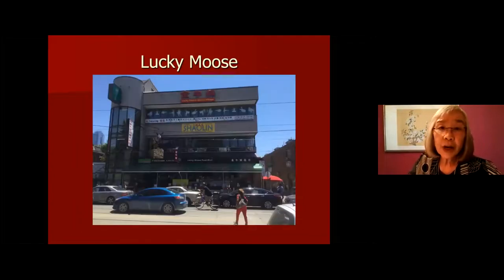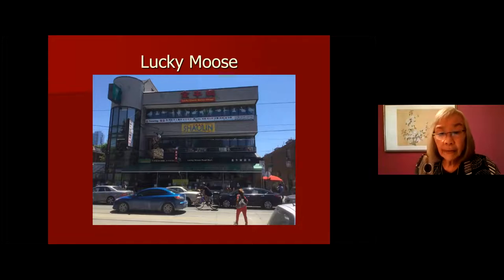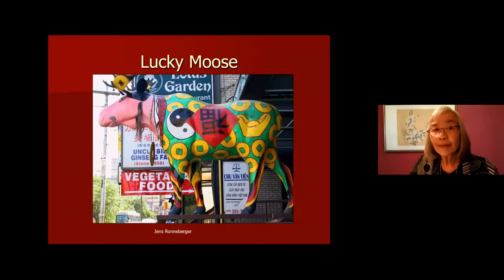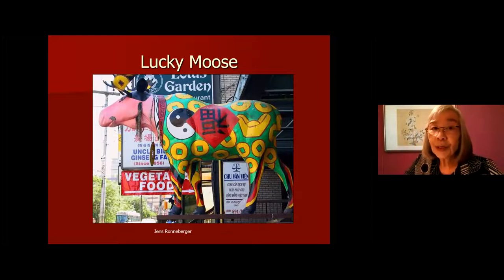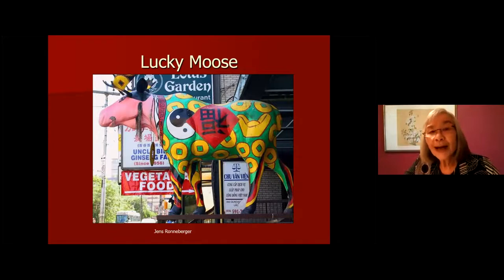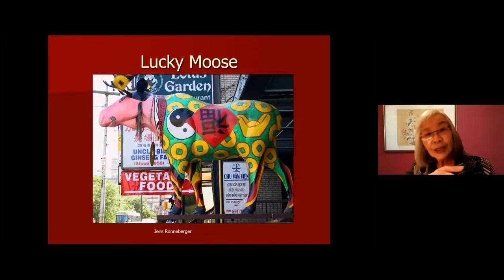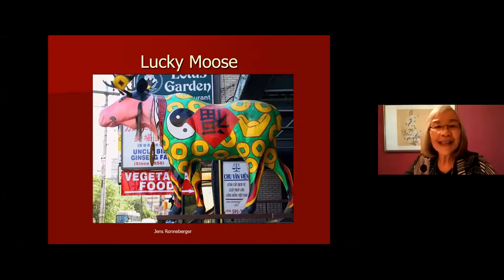The first building I want to stop at is on the south side of Dundas Street between Beverly and Huron Street. On the second level you'll see a moose — this is a close-up of what we call the Lucky Moose. Anybody who remembers the year 2000, when Mayor Mel Lastman wanted to make Toronto the moose capital of the world — there were 300 decorated mooses all around the city. Our moose in Chinatown is called Lucky Moose because it's created with Chinese symbols for good luck, greeting everyone coming into our Chinatown West.